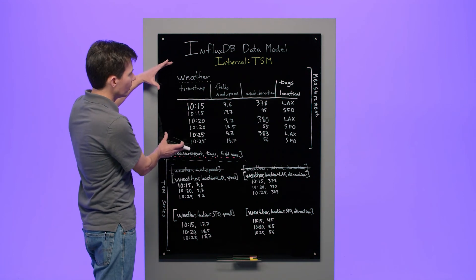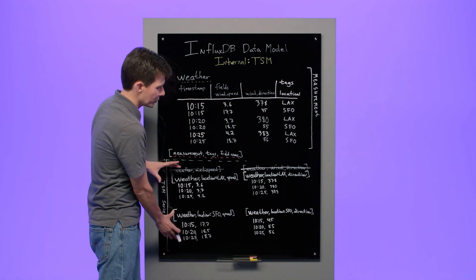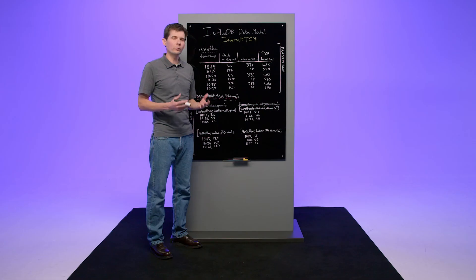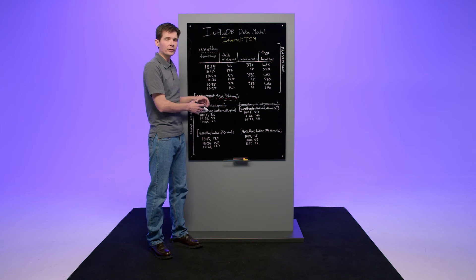You can see that still, all of the data stored in this measurement can be found in these four series. One more time, TSM stores these data in four series on disk.